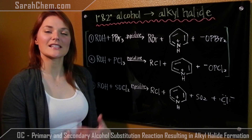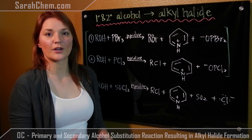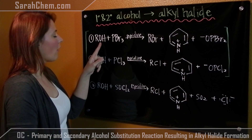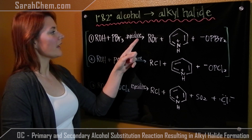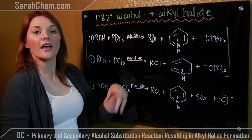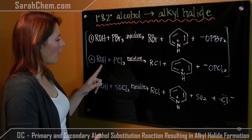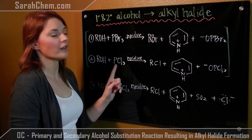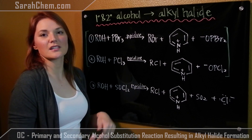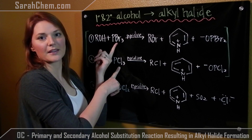When we're talking about primary and secondary alcohols, there are three different reagents that we'll primarily look at. You can react the primary or secondary alcohol with phosphorus tribromide in the presence of pyridine — when you do this, an alkyl bromide will come out. A very similar case is using the primary or secondary alcohol with phosphorus trichloride, also in the presence of pyridine. The nice thing about these two reactions is the mechanism is virtually identical, outside of a chlorine versus bromine substitution.